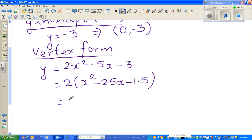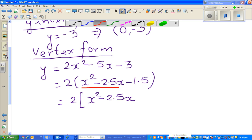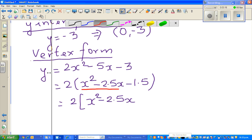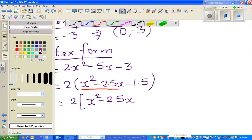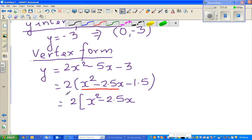So the next step would be 2 times x squared minus 2.5x. I'm going to write this as a perfect square. I'm only looking at these two terms. So x squared minus 2.5x, then I have to do half of negative 2.5.